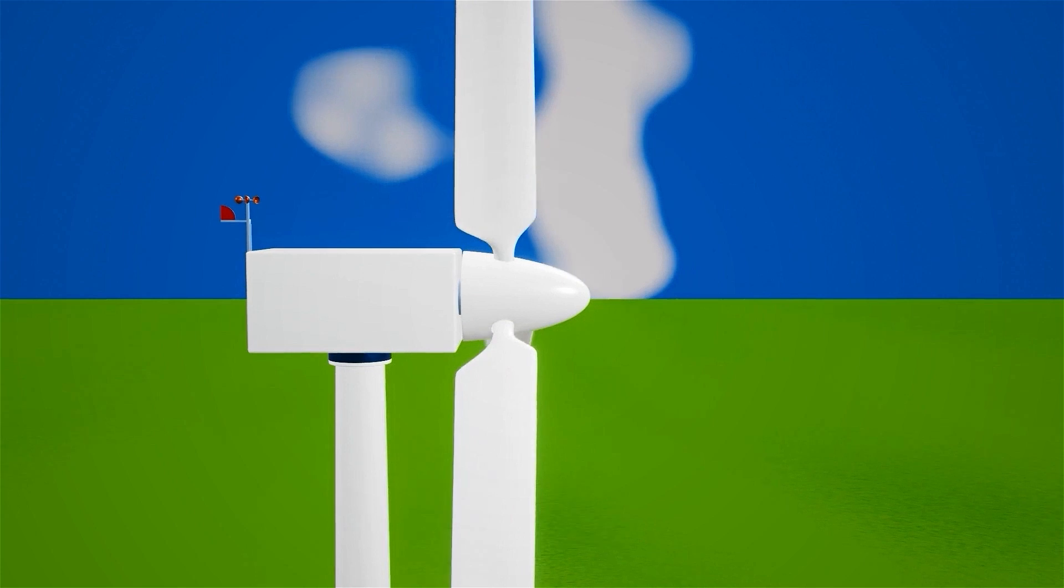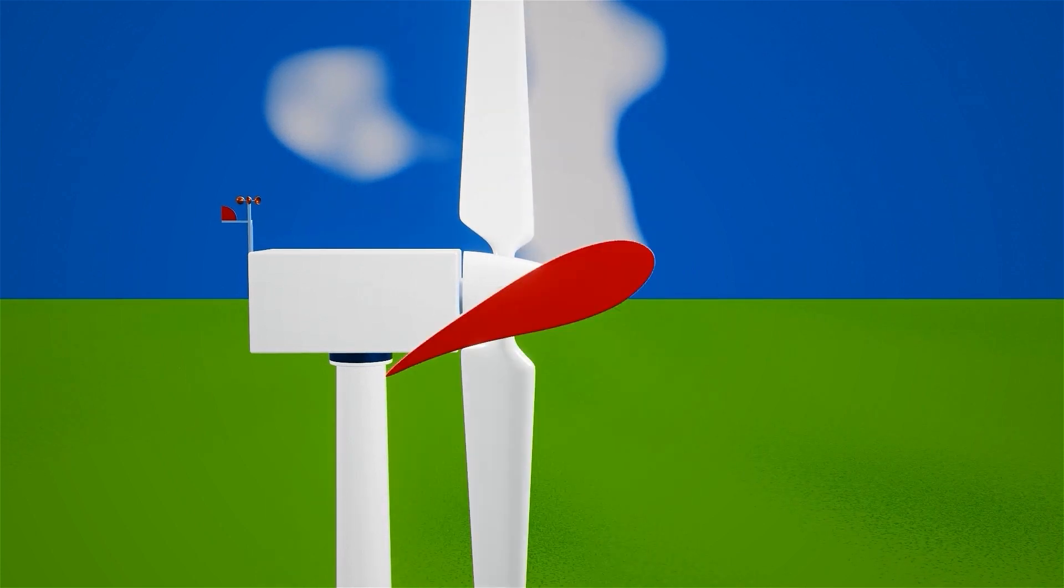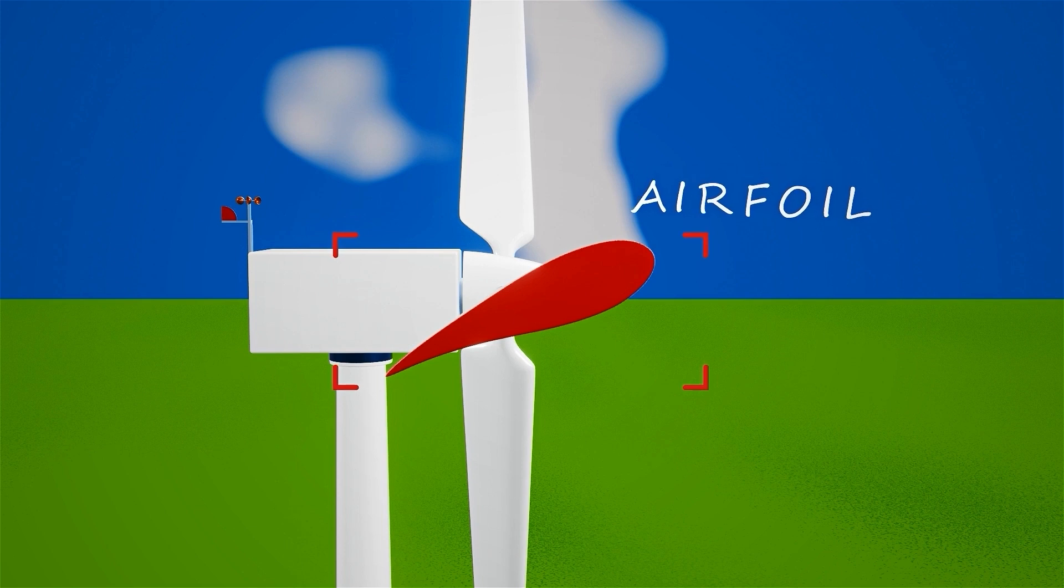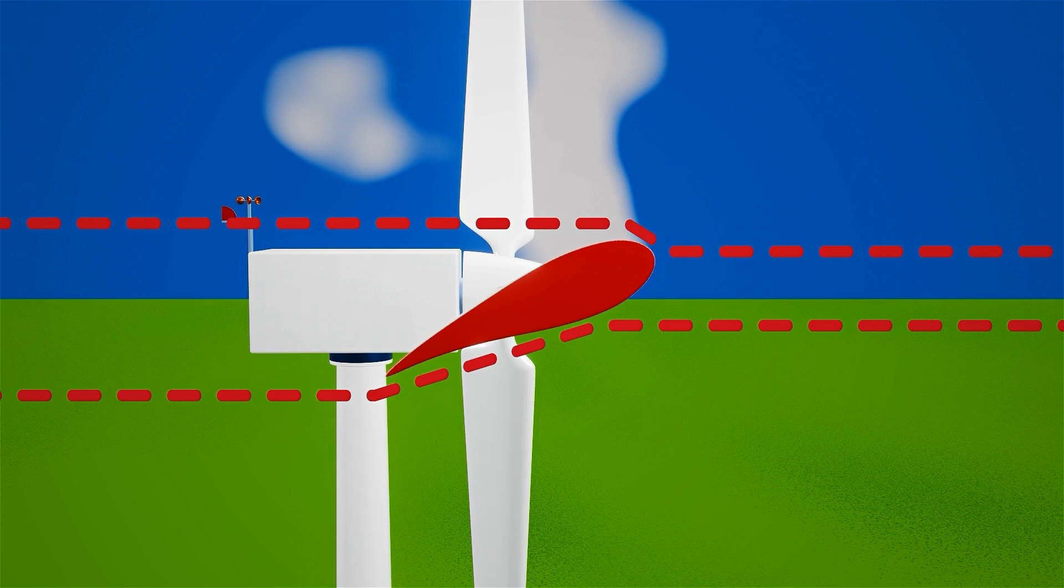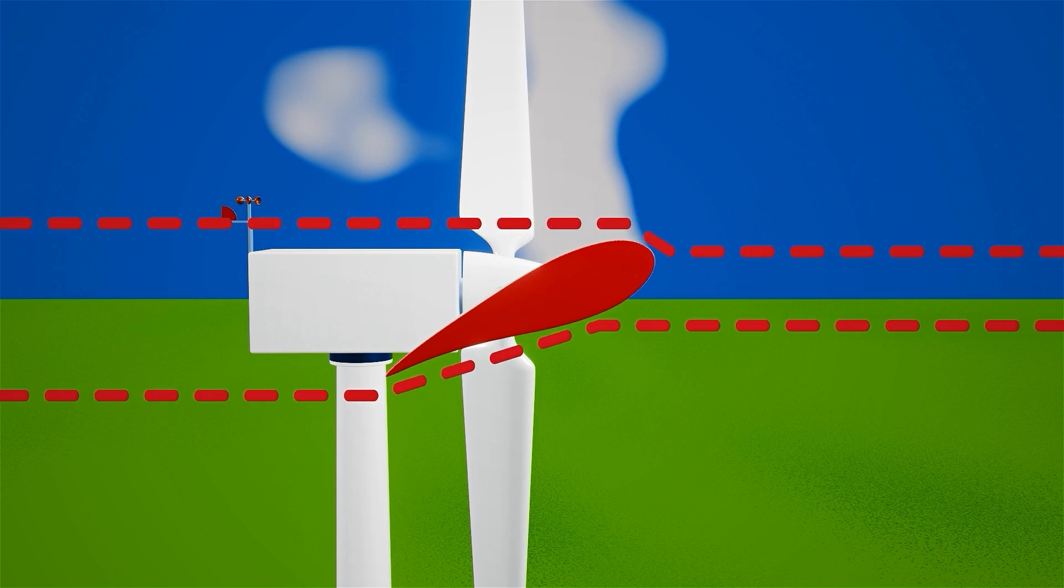The blades of wind turbines are designed in a specific shape known as an airfoil. When the blade catches the wind, it cuts the air into two streams. The air passing beneath the blade faces greater resistance due to the airfoil shape, causing a decrease in speed and an increase in pressure.